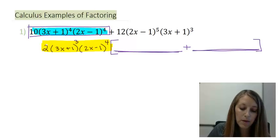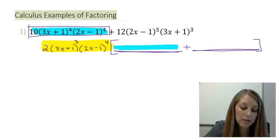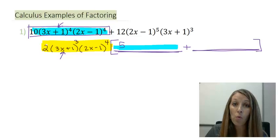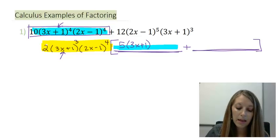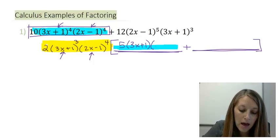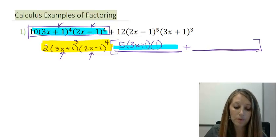So 10 divided by 2 gives me 5. I have 3x plus 1 to the 4th, and I took out 3x plus 1 to the 3rd, so I have one set of those parentheses left over — that gives me 3x plus 1. In my second set of parentheses, I had 2x minus 1 to the 4th, and I took out 2x minus 1 to the 4th. So I've taken out all of it, meaning I'm left with 1.